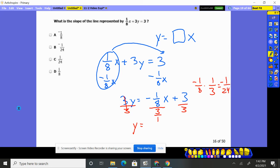It's negative 1/24th. Negative 1/24 X plus 1. We have a slope of negative 1/24th, choice B.